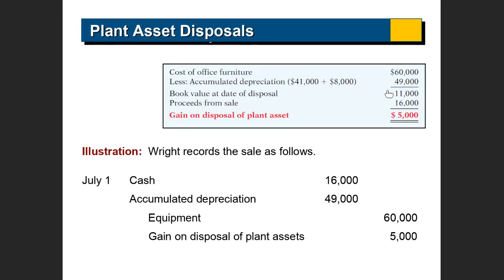There is a gain of $5,000. So you have cash of $16,000. You have to debit accumulated depreciation for $49,000, credit the equipment for $60,000, and record a $5,000 gain. You receive $16,000 cash and you have a $5,000 gain because the book value was $11,000. A gain increases equity — it is a credit, it is income.